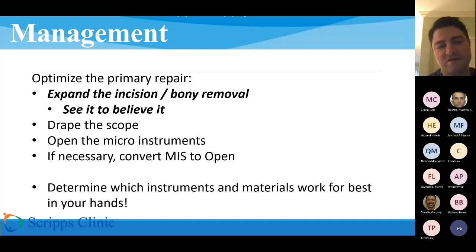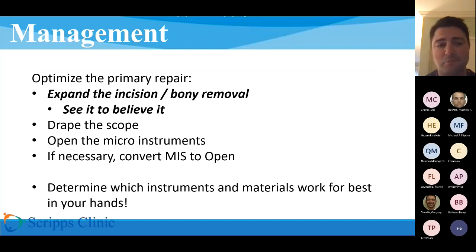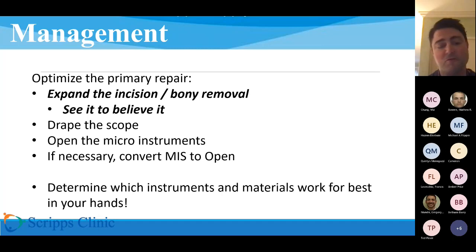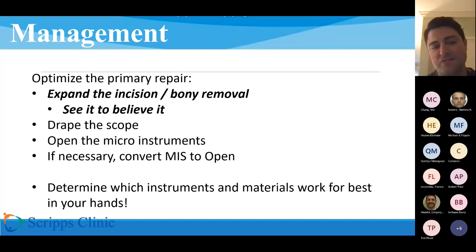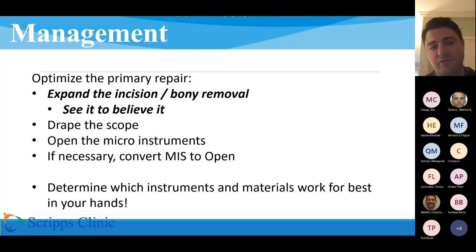Set yourself up for success. The primary goal of the surgery was probably decompression, but you have to reset and make the primary goal closing the leak. That means you may have to expand the incision and expand the bony removal. For a bad one, I often have to take the tube out and do a midline takedown — it dramatically changes the operation, but to get a good repair that's necessary. Do what you have to in order to widen your exposure, even if it temporarily changes the nature of the operation.